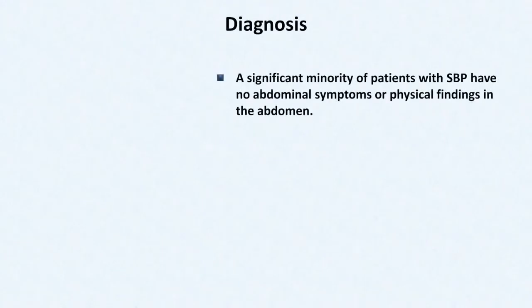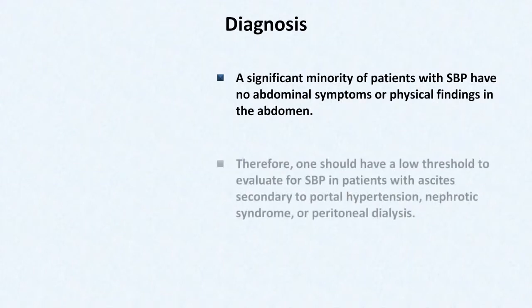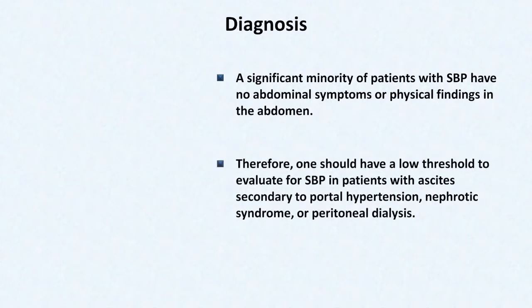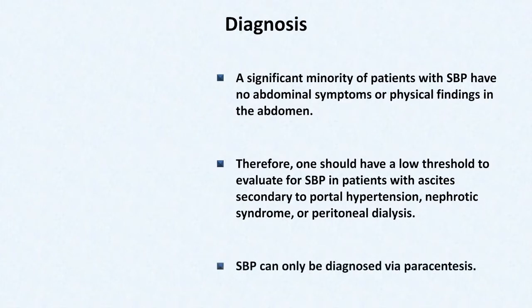A significant minority of patients with SBP have no abdominal symptoms or physical findings in the abdomen at all. Therefore, one must have a low threshold to evaluate for SBP in patients with ascites secondary to portal hypertension, nephrotic syndrome, or peritoneal dialysis. And the only way to diagnose SBP is with a procedure called a paracentesis.